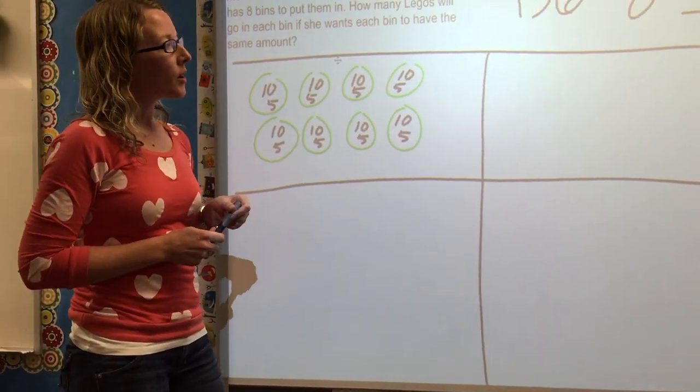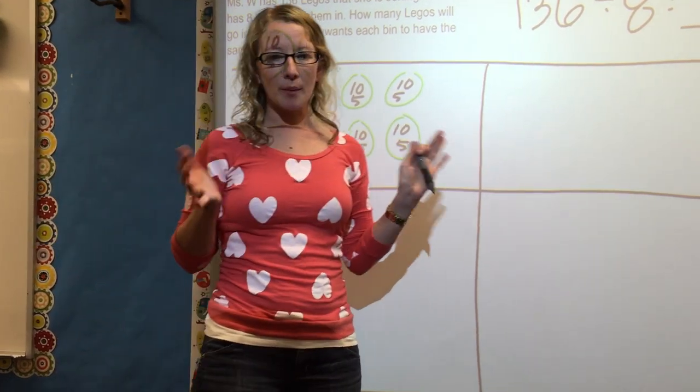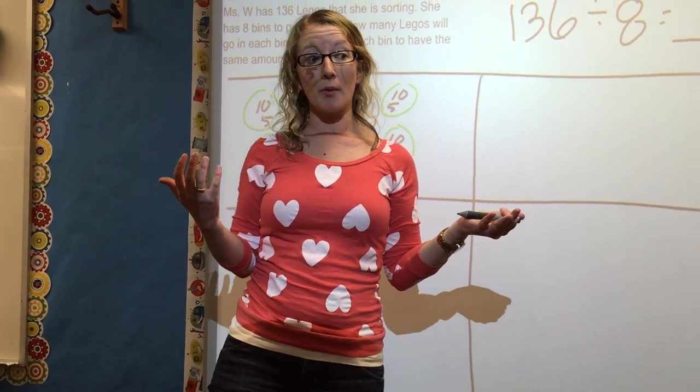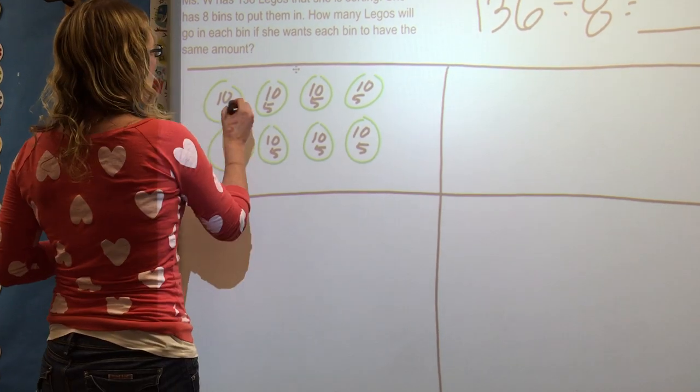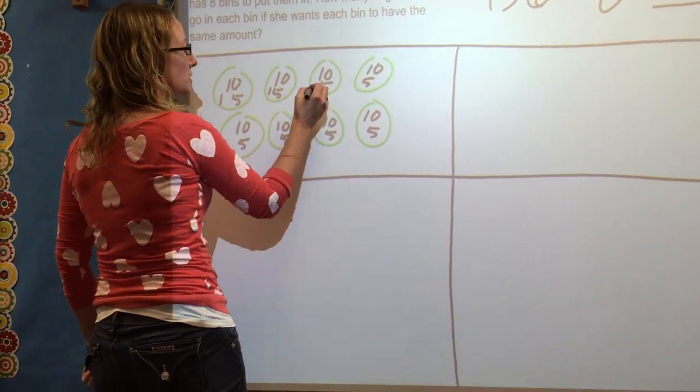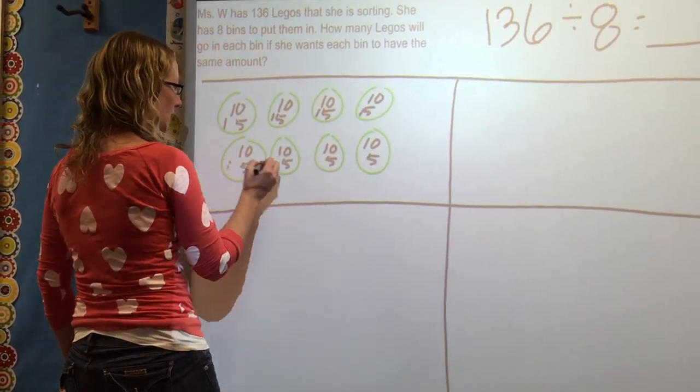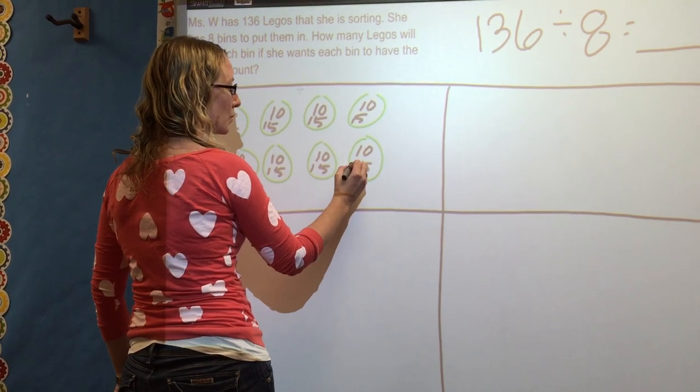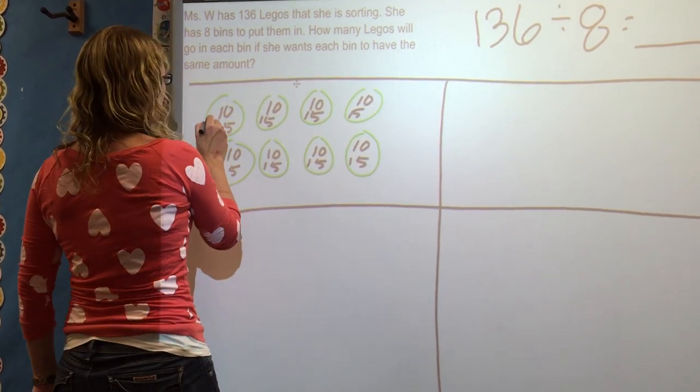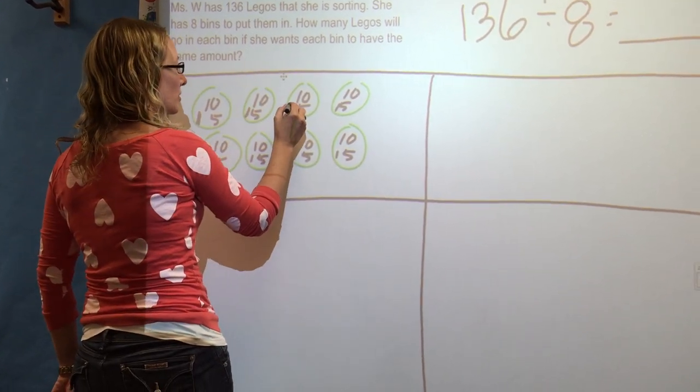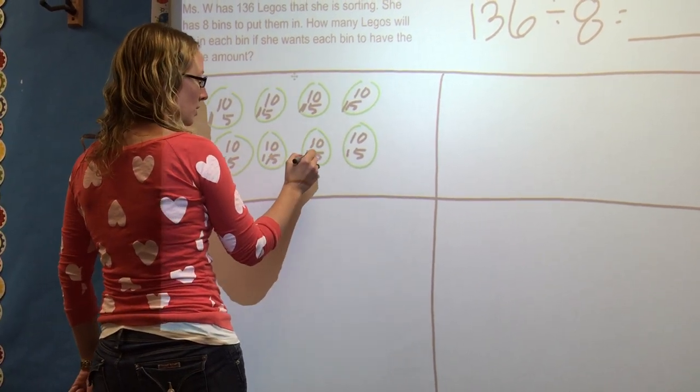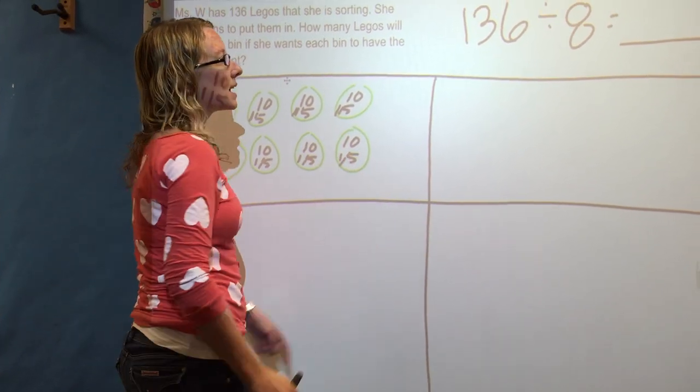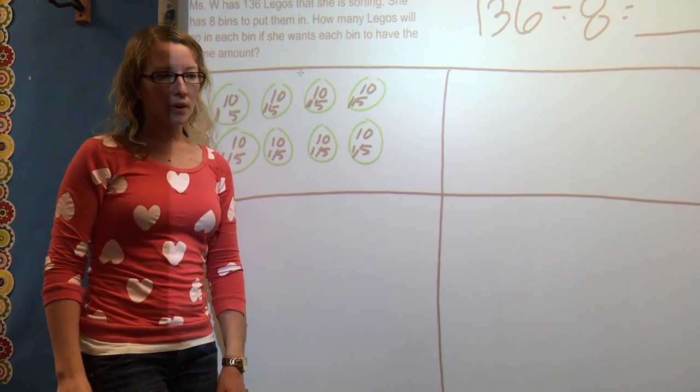We've got 15 Legos in each bin. Okay, I'm not exactly sure how many Legos I should do now. So now I'm just going to go by ones. So I'm at what number? 120. 120. 121, 122, 124, 126, 127, 128. Closer. 129, 130, 131, 132, 133, 134, 135, 136. I landed on exactly 136.